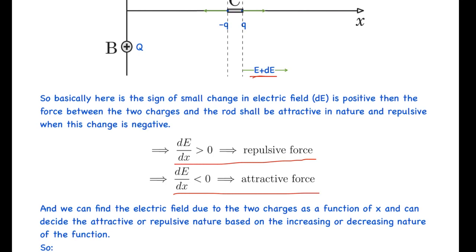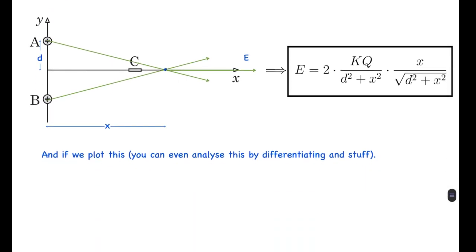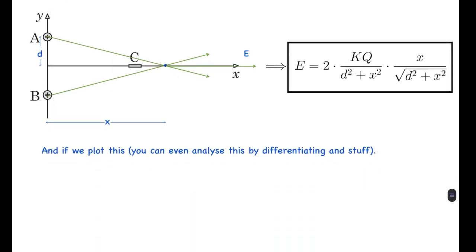So here, first of all, we can calculate the electric field at any point at a distance x, assuming the distance d between the central axis and the charges. From here we get the electric field to be 2kQ/(d² + x²) times x/√(d² + x²). This represents the cosine of the angle, and this is the strength of the electric field at that point. Twice is because there are two charges.